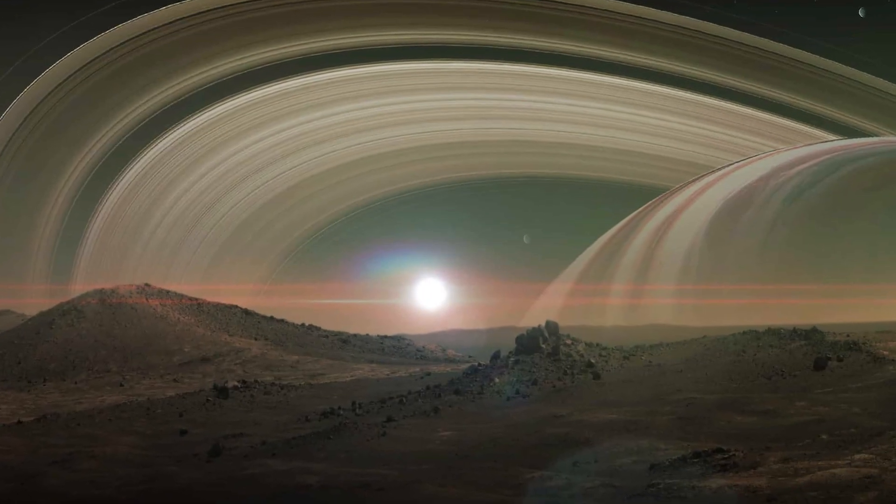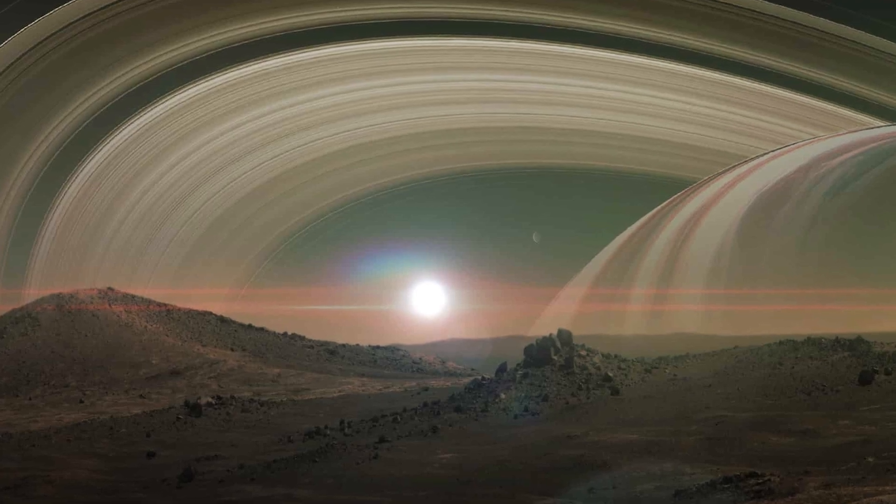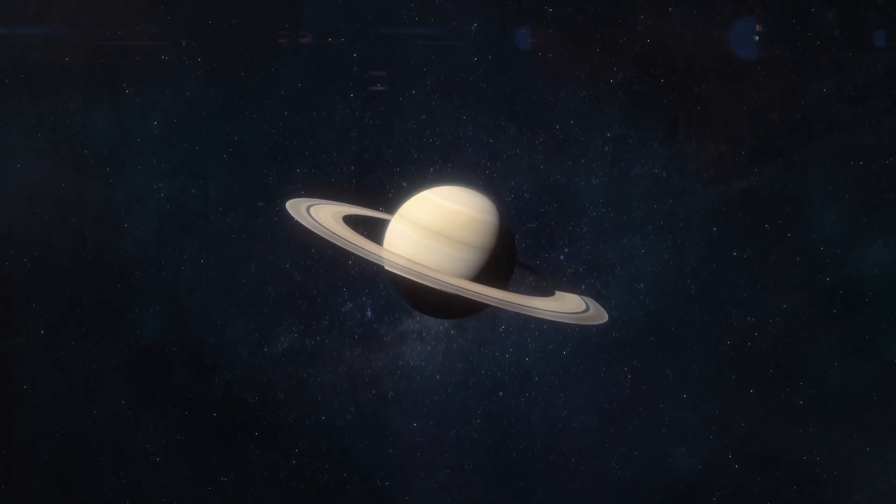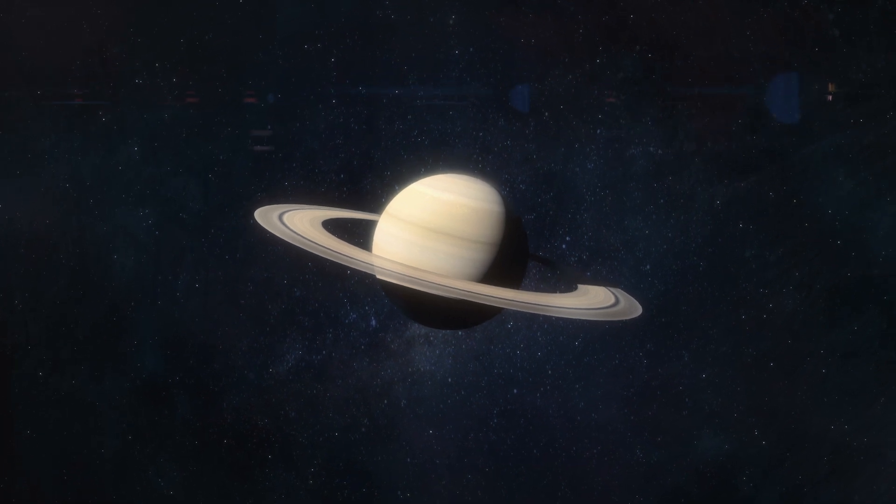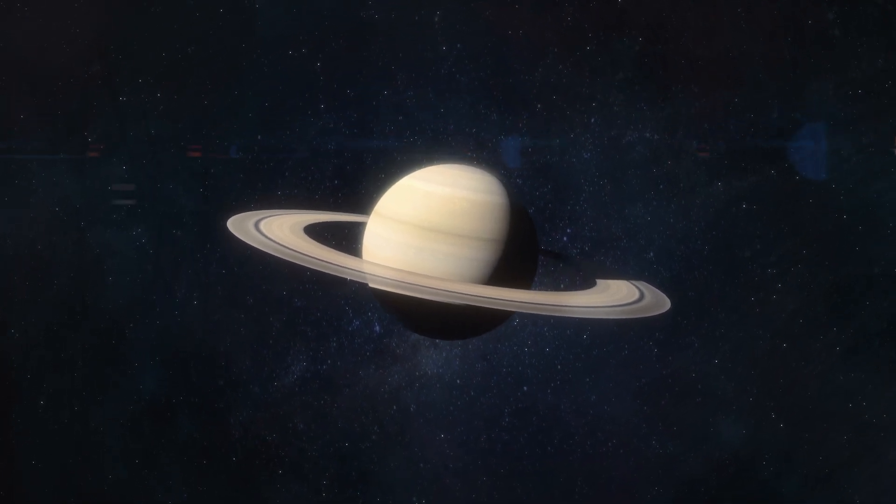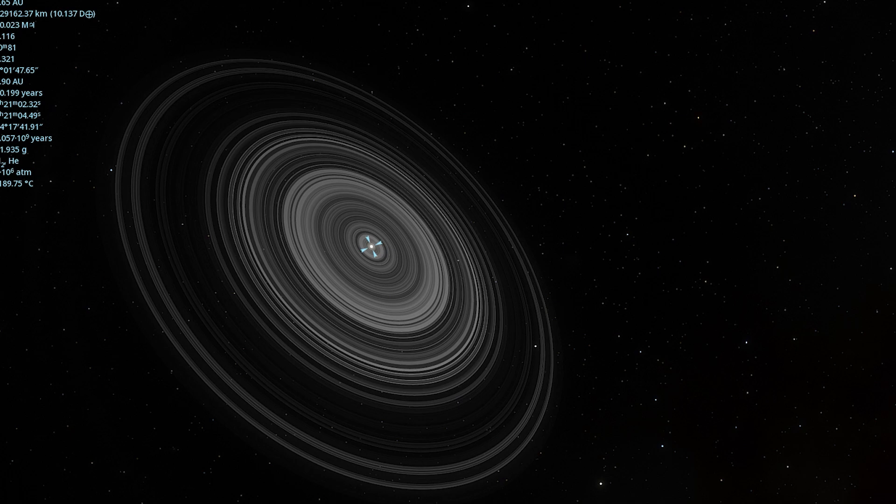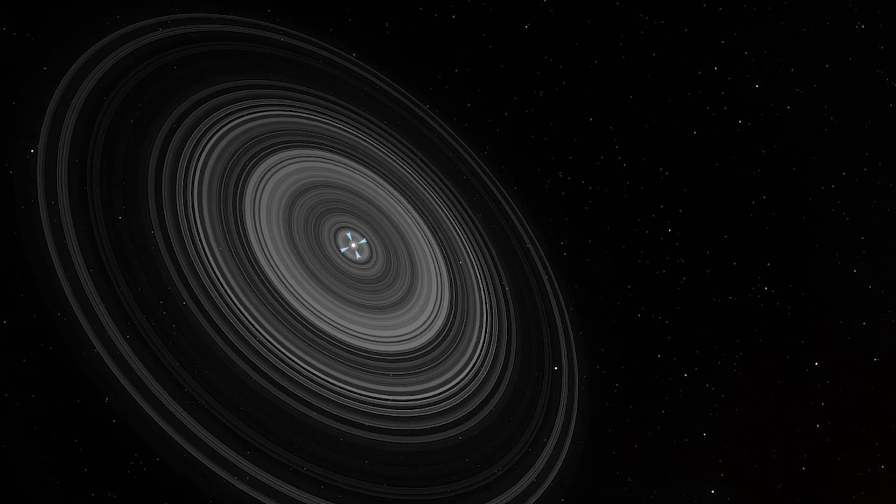Imagine Saturn with rings this vast dominating our night sky. However, such a spectacle would be short-lived as the rings would gradually diminish, giving way to forming satellites. And J1407b is just a glimpse of the universe's oddities.